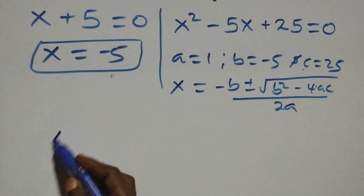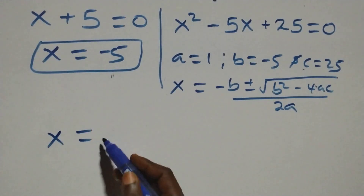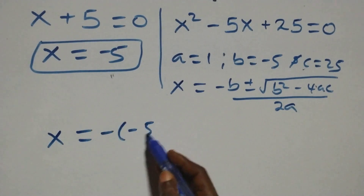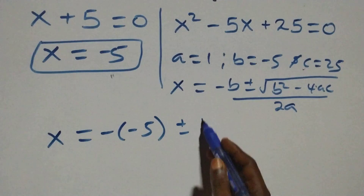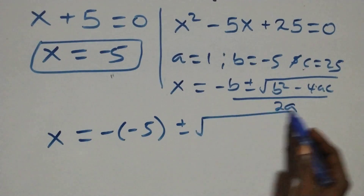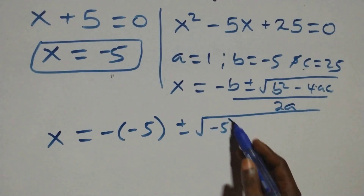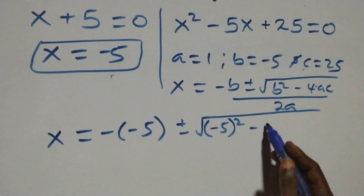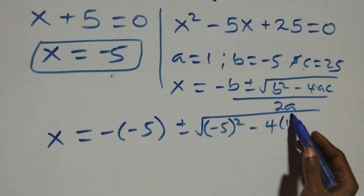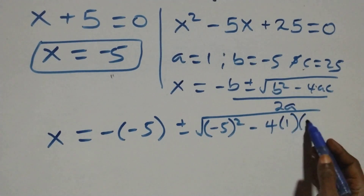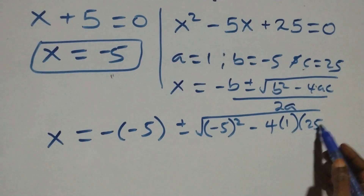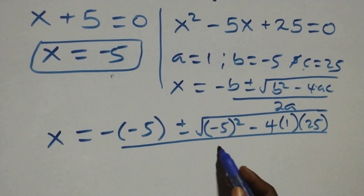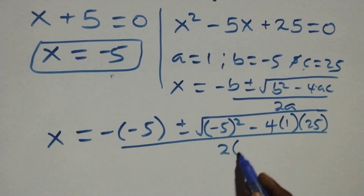Substituting, x equals to minus of minus 5, plus or minus square root of minus 5 squared minus 4 times 1 times 25, then over 2 times 1.